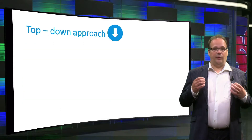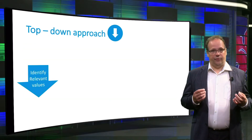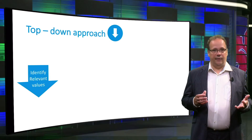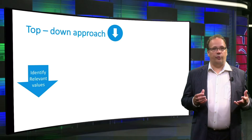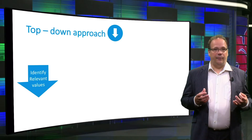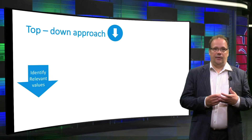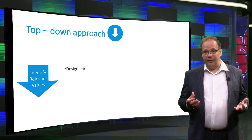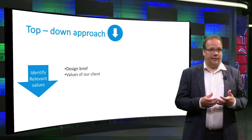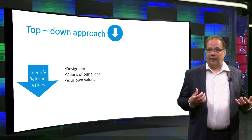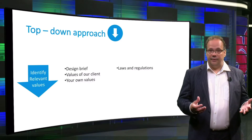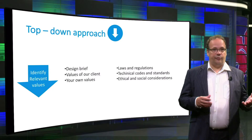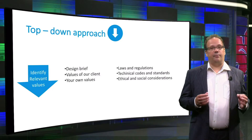The first step is to identify relevant values. Values are all around us — they influence all the choices we make. So it is not a question of whether values are present, but rather where to find them and how to recognize them. There are many relevant sources to derive values from: the design brief, the values of your client and stakeholders, your own values as designers, laws and regulations, technical codes and standards, ethical and social considerations like those found in codes of conduct, and many other places.